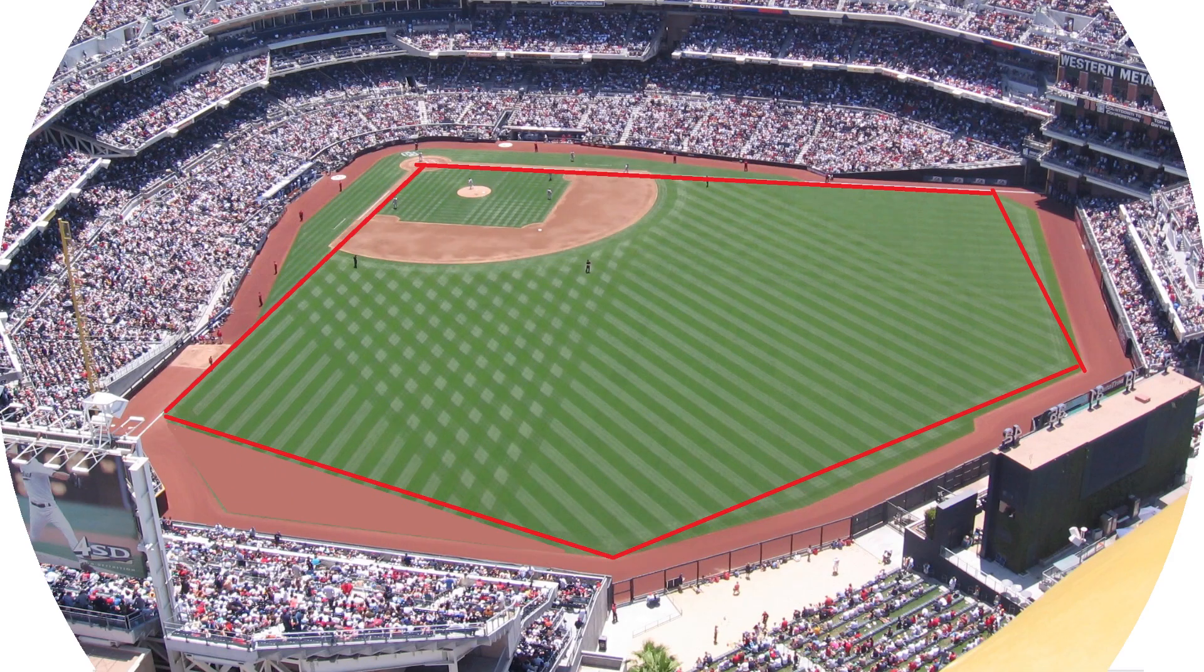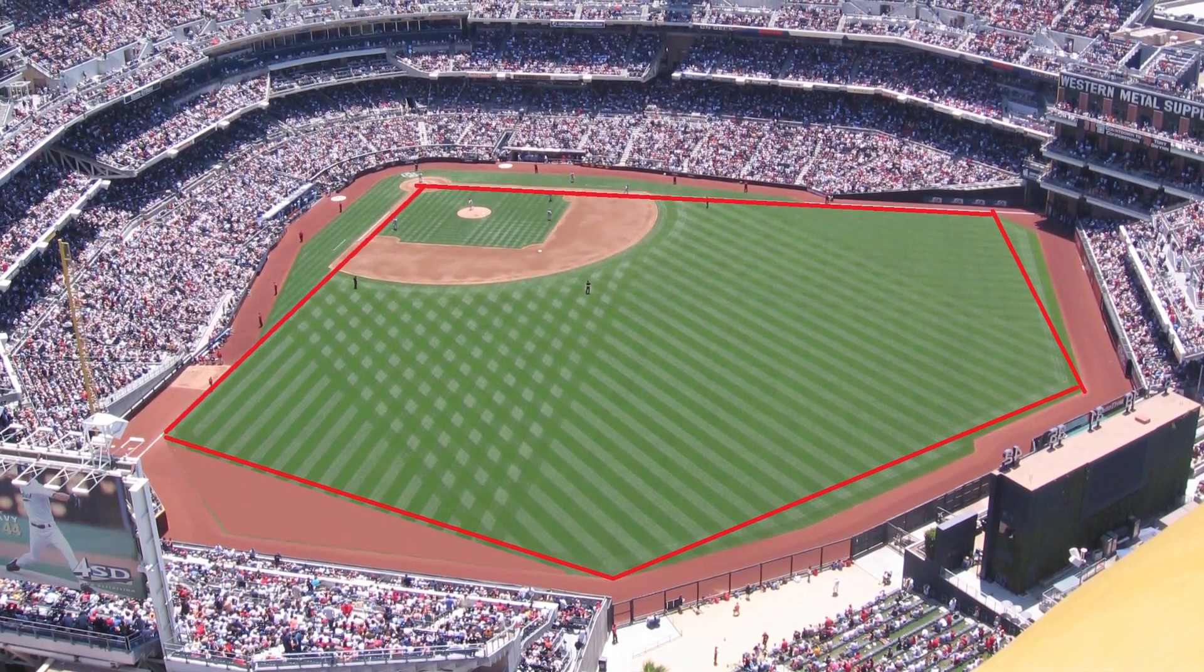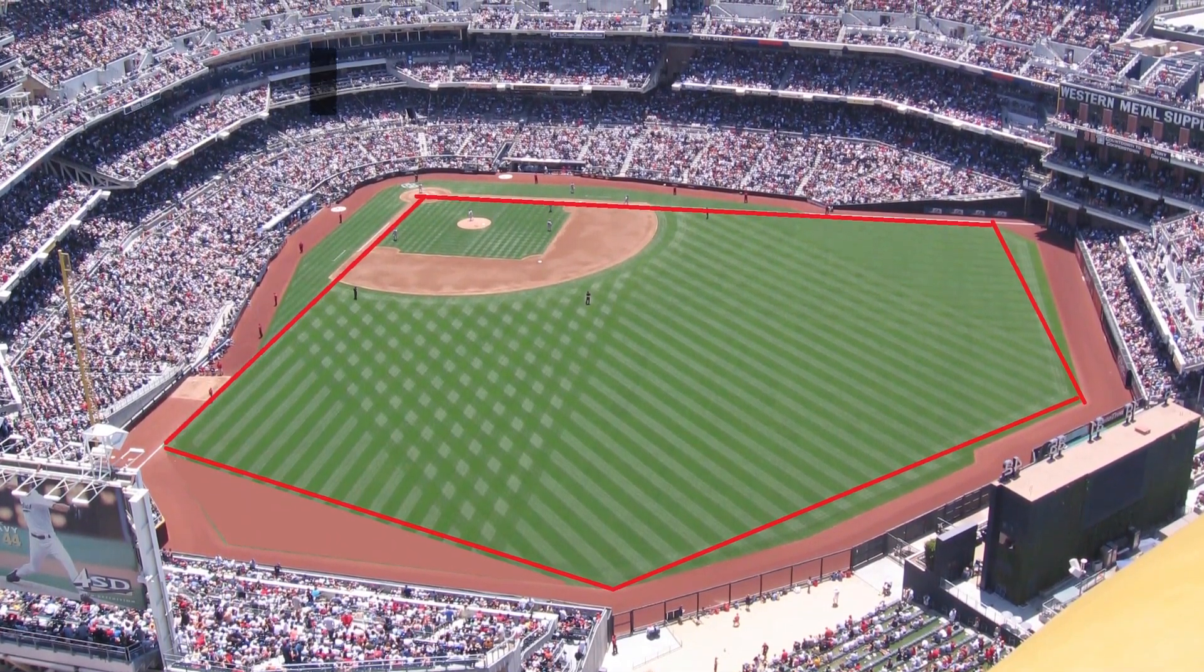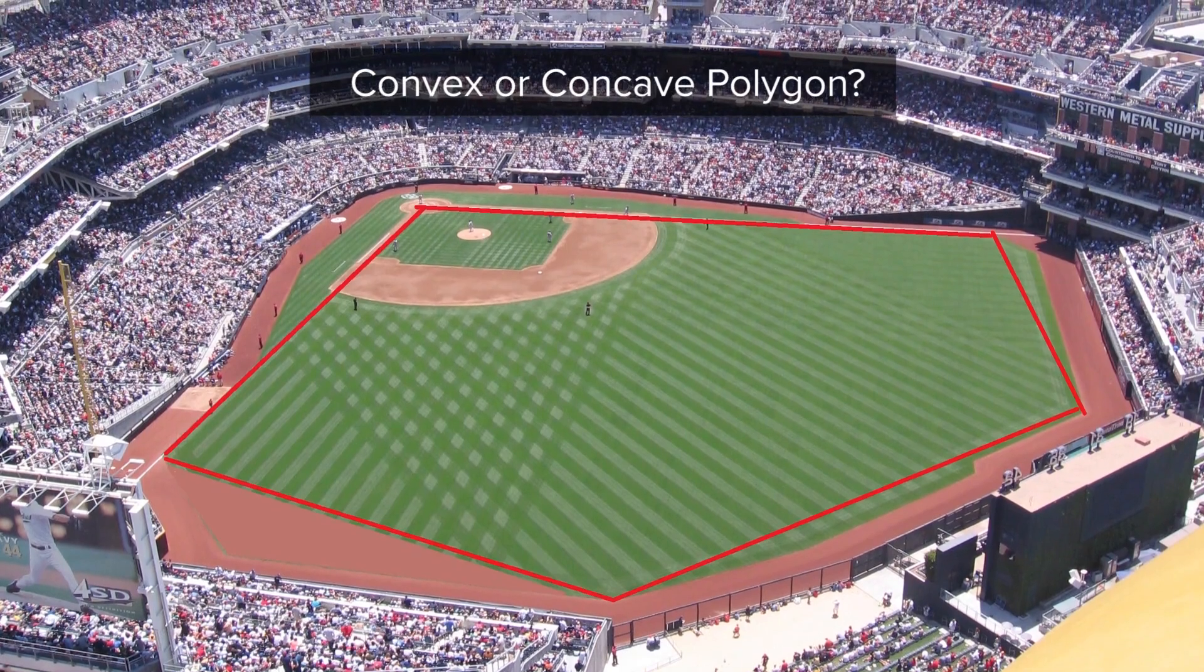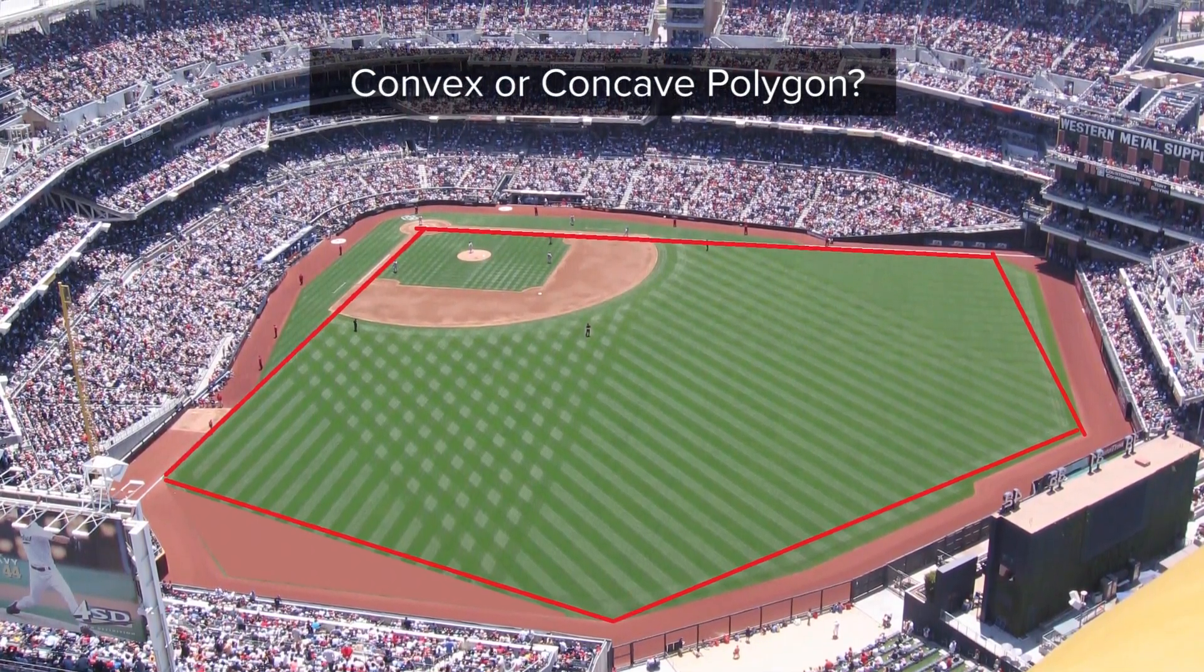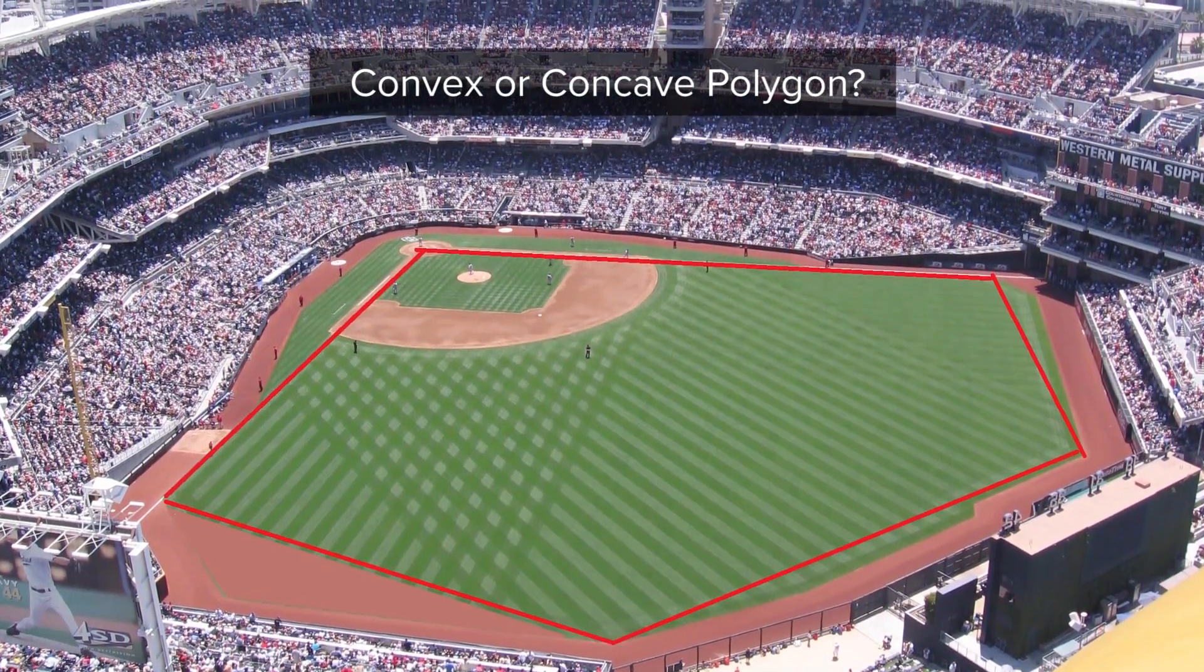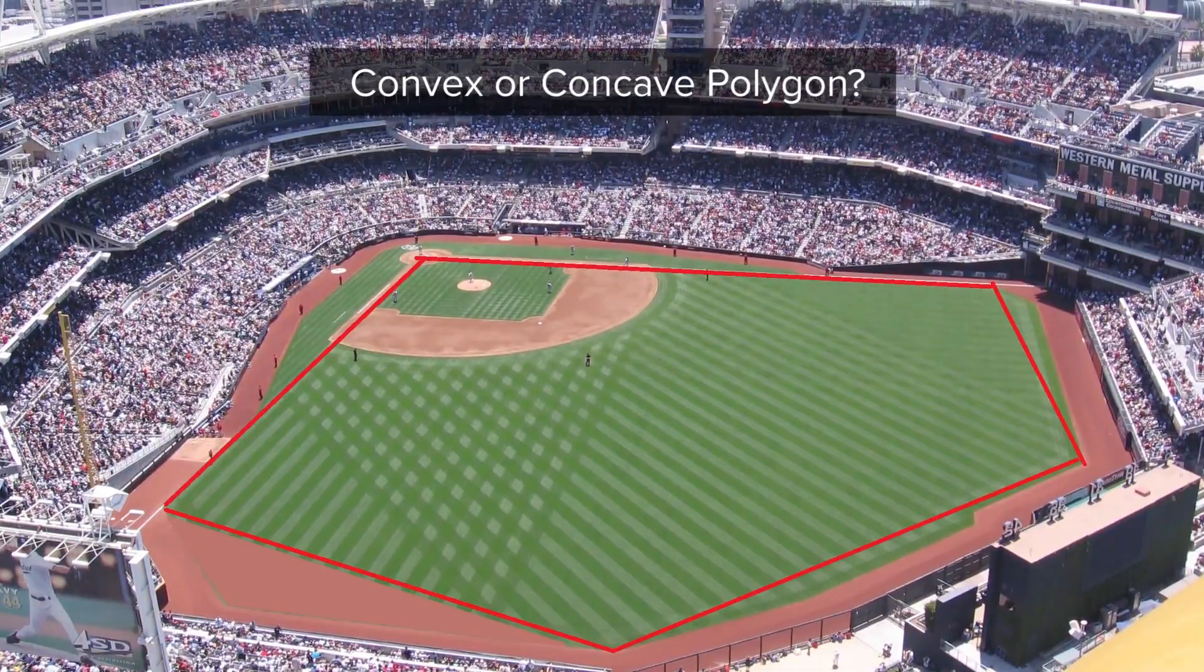Now, let's see an example. This is the top view of a baseball field. Can you tell us which polygon is convex or concave? This is a convex polygon because all the diagonals of this polygon are in the interior.